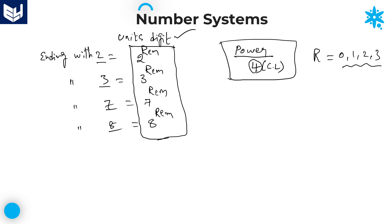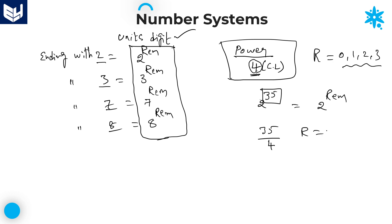Let me explain with a small example: 2^35. The number is ending with 2, so the required units place is 2^(remainder). How to get the remainder: divide the given power value 35 by the cycle length of 2, which is 4. 35 divided by 4 gives remainder 3. Therefore the required answer is 2^3 = 8.